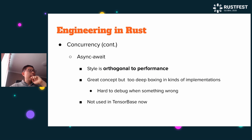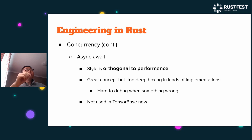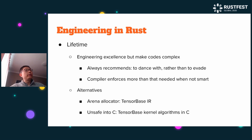Async/await is another feature not used in TensorBase. A little note: async/await is also oriented toward performance, so use it correctly. You have to achieve performance correctly, or you may harm performance. Lifetime is another engineering excellence in Rust, but it can make code complex.